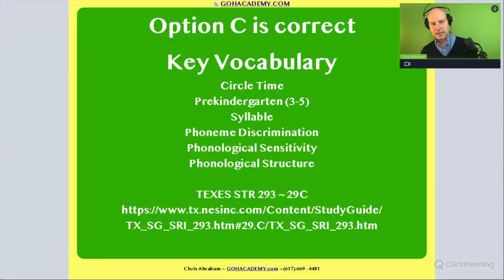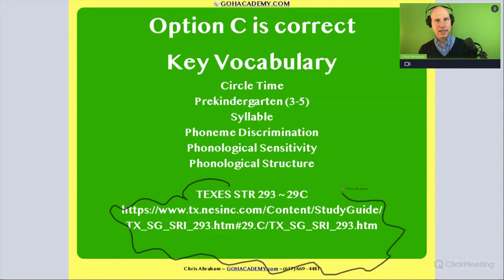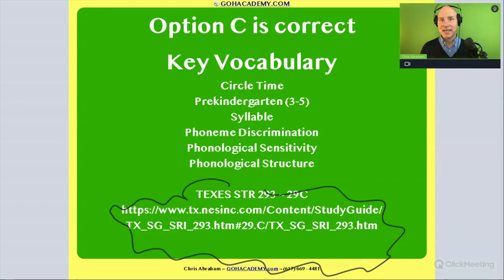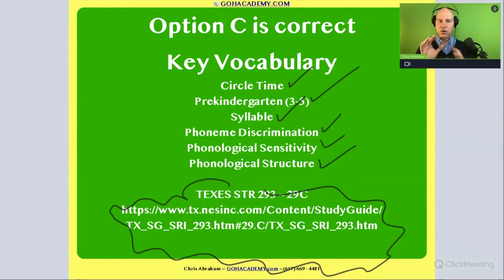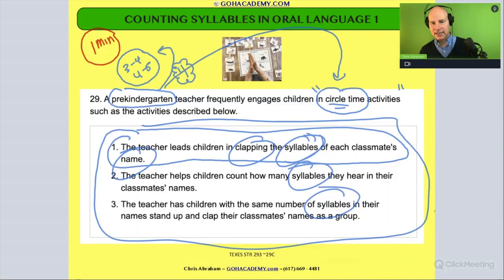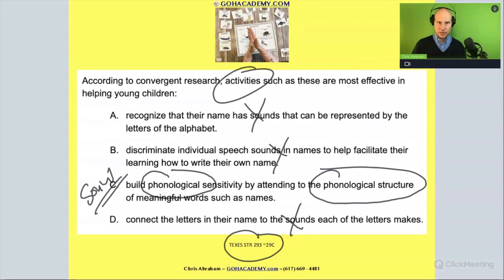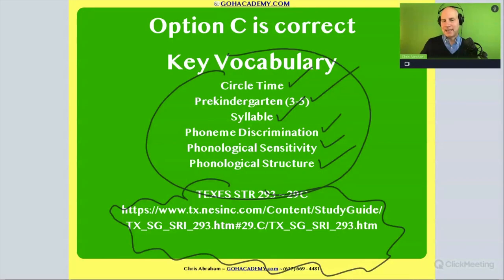This question is from the Texas Science of Teaching Reading exam — a great one to study if you're in Texas taking the STR, or if you're doing Foundations of Reading or Reading Specialists. Look at the vocabulary in this question: circle time, pre-kindergarten, syllable, phoneme discrimination — being able to distinguish between individual phonemes — phonological sensitivity, and phonological structure. These are all very important ideas. Always go back and review the vocabulary one more time after working through a question.